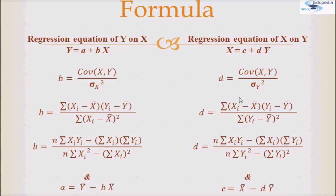In the same way, the regression equation of x dependent on y is x = c + dy, where d, the regression coefficient, is given by the covariance between x and y divided by σy². The numerator is the same as before, but the denominator changes to the variance of y. So d equals n times summation(xi·yi) minus summation(xi)·summation(yi), divided by n times summation(yi²) minus [summation(yi)]². And c equals the average value of x minus d times the average value of y.